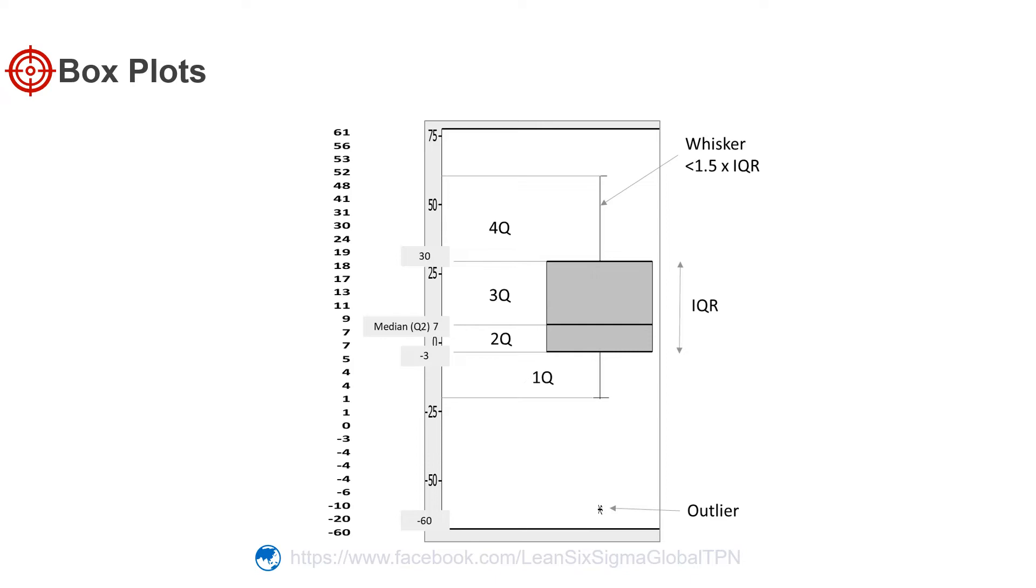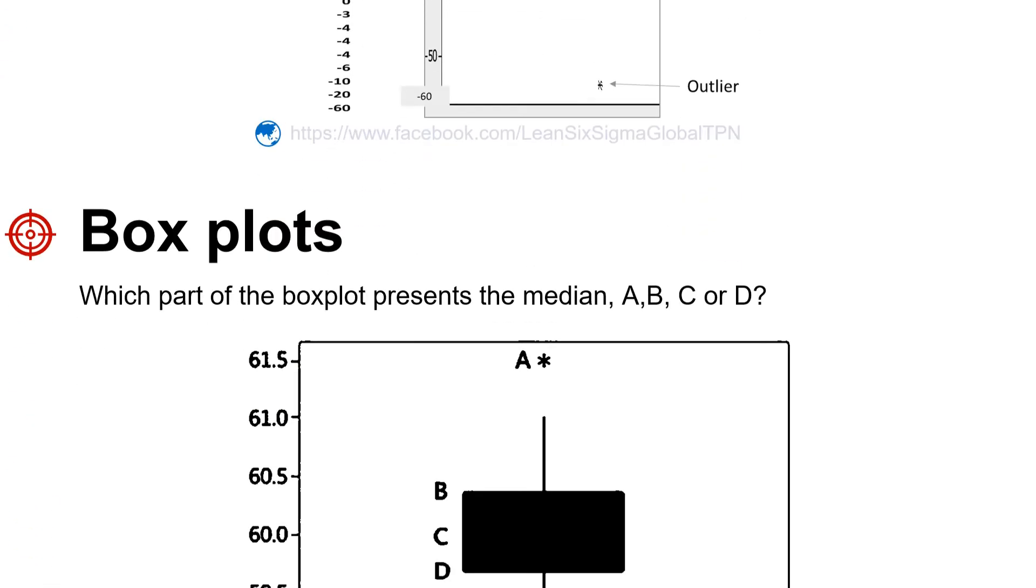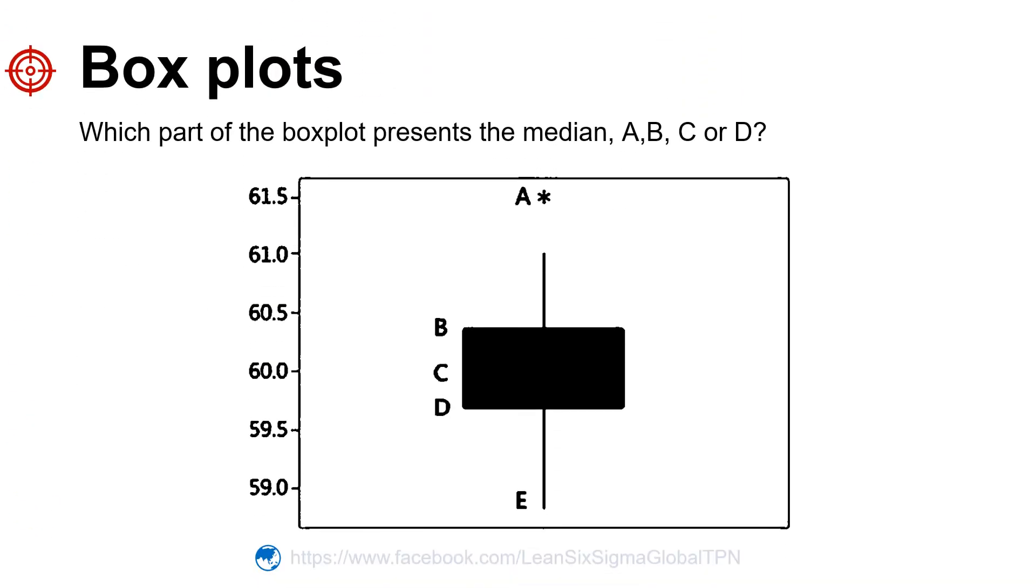Any points outside of this range are outliers and are displayed individually. Here's an example - which part of the box plot represents the median: A, B, C, or D?